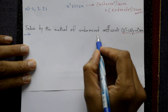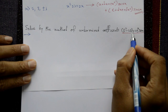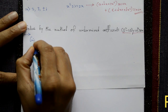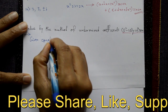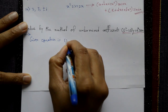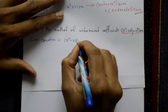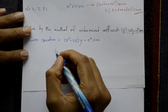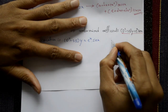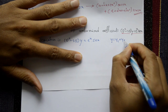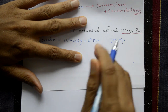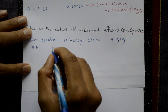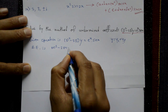Solve by the method of undetermined coefficients: (D² - 2D)y = eˣ sin(x). The given equation is D² - 2D into y equal to eˣ sin(x). We find the complete solution y = yc + yp. First we find yc, then yp. The auxiliary equation is m² - 2m = 0.